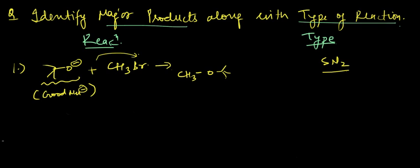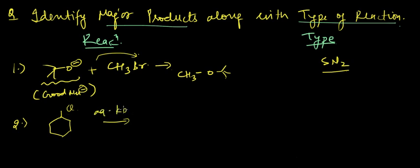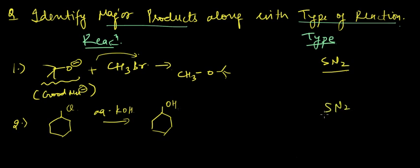Let's continue from the previous lecture. We have chlorocyclohexane reacting with ethanolic KOH. Which type of reaction will take place? This is a standard SN2 example.